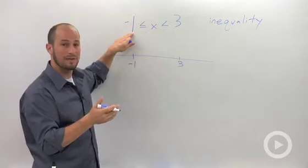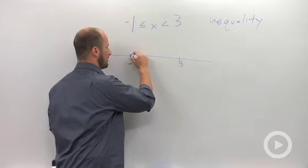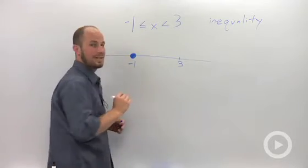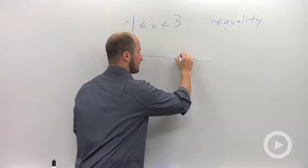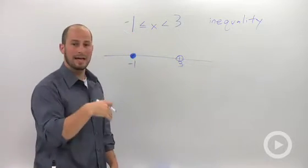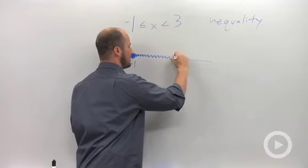We include negative 1. So when you include something, we draw a solid circle. You circle and fill it in. When you don't include something, you have an open circle. And just shade your line in between the two.